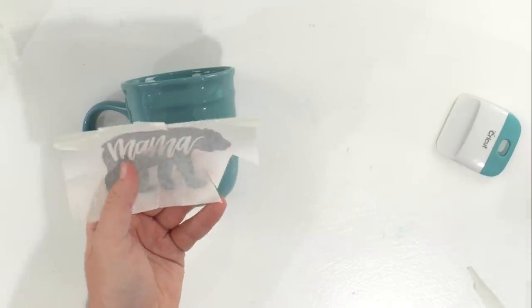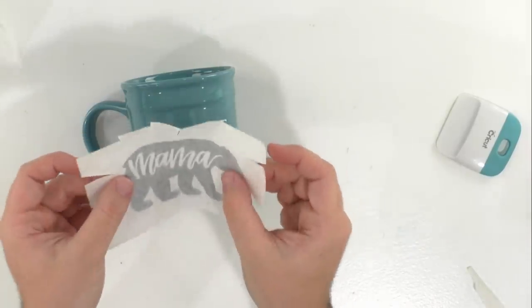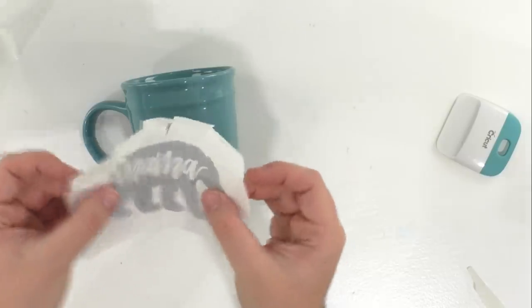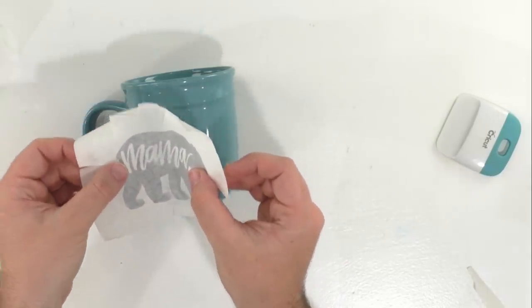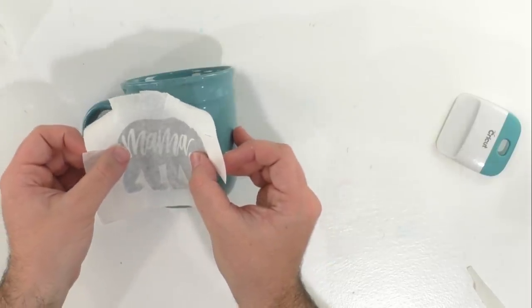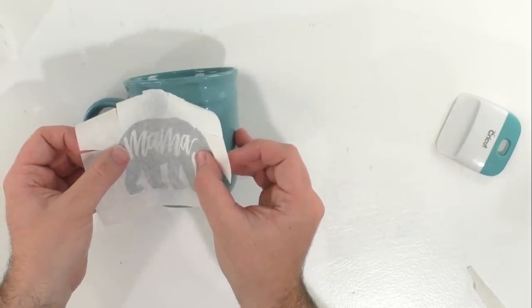Now that you've snipped it, we're going to taco it again. We're going to find where we want to position it, start in the middle, and just like we did before, apply it and work our way to each side.